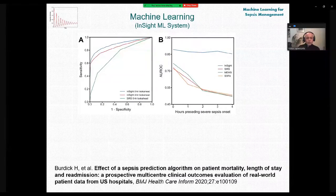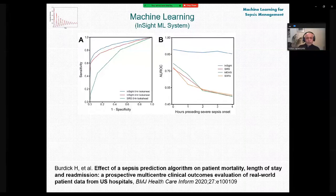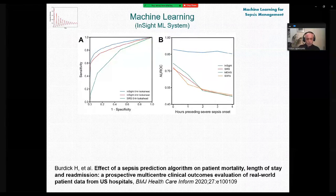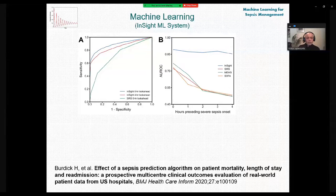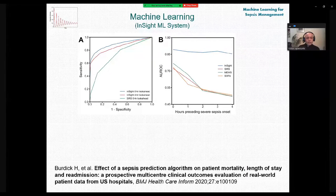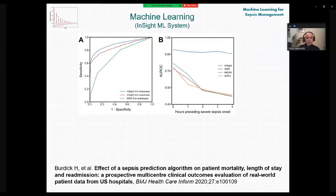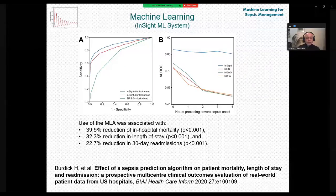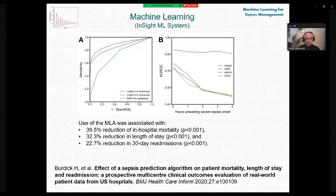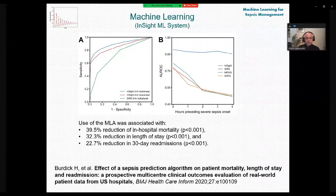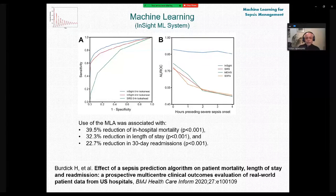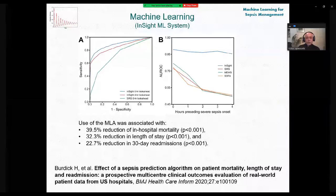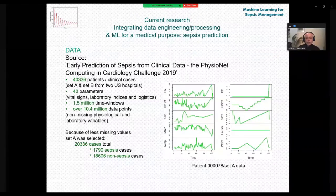The InsightML system and at the bottom of the screen you have an article with more details about this. I will show only two diagrams. I would like you to pay attention to the diagram on the right with the performance of different systems. The upper curve is for the InsightML system. The lower one are for the regular tools including SOFA and you can see the difference. One of the outcomes concerning the use of this system will be 39.5% reduction of in-hospital mortality.